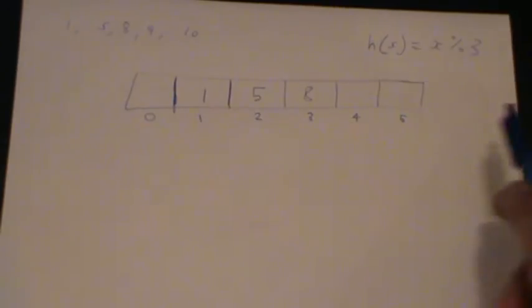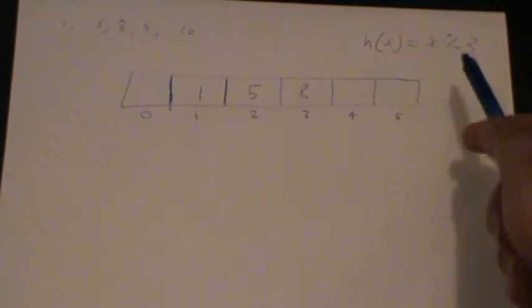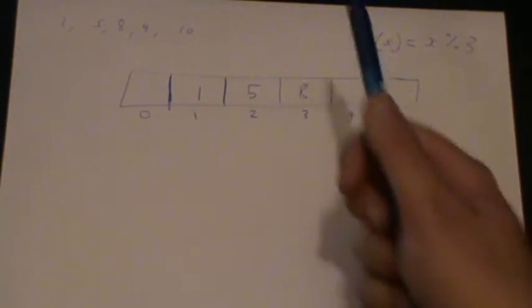Say we wanted to insert 9 now, so we just get h of 9, so 9 mod 3 is 0, so we just put 9 here.